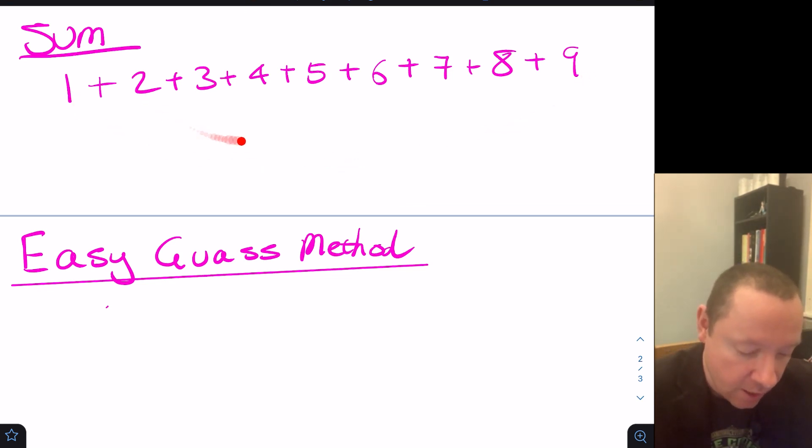9 and 1 is 10, 2 and 8 is 10, 3 and 7 is 10, 4 and 6 is 10. So I've got 4 tens plus an extra 5.